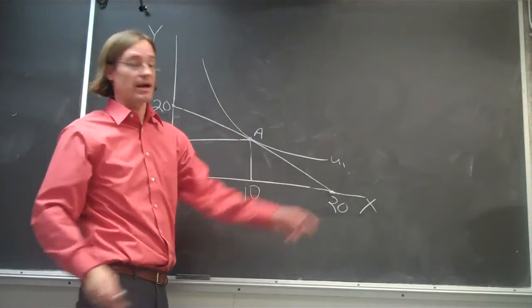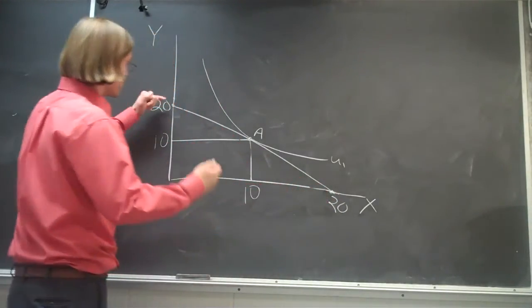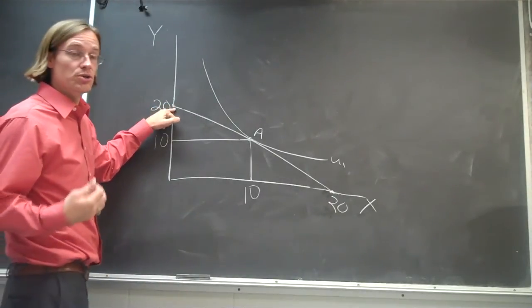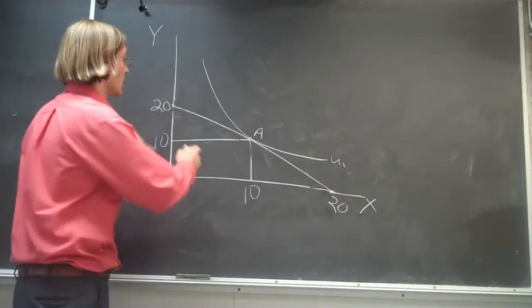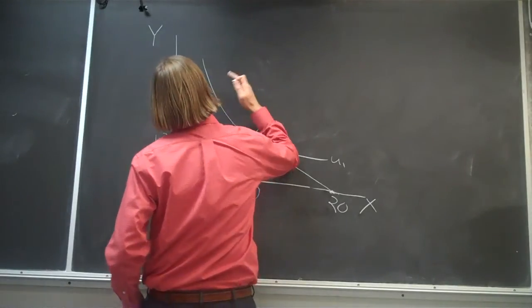Nothing's changing about X. The price of X isn't changing. But as the price of Y drops, you know you can buy more of good Y. And so this budget line rotates.